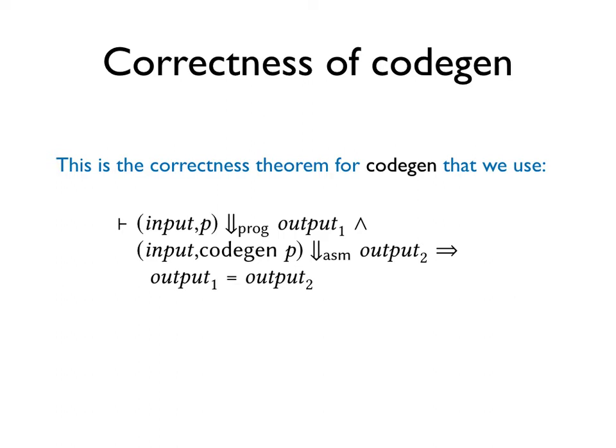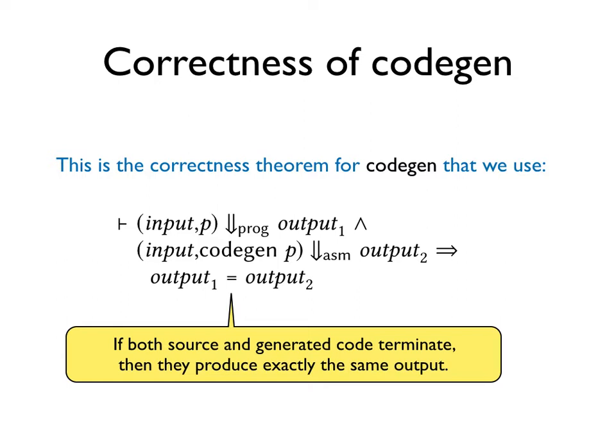Equipped with a semantics judgment for source and target, we can state what it means for our code gen function to be correct. This theorem can be read as saying, if both source and generated assembly code terminate, then they produce exactly the same output. There are other more general ways of phrasing compiler correctness, but this simple statement will do for our purposes here.